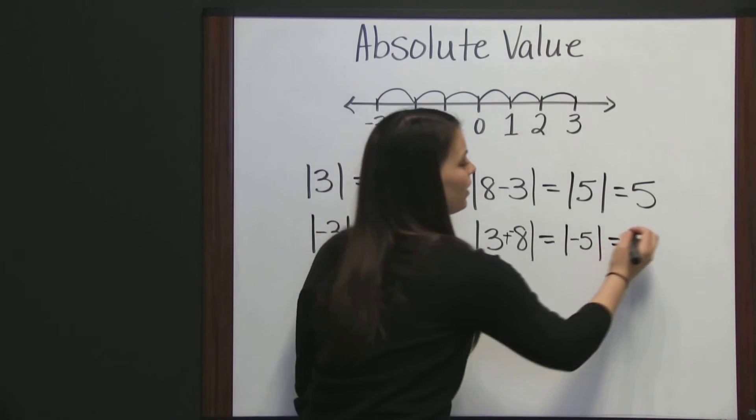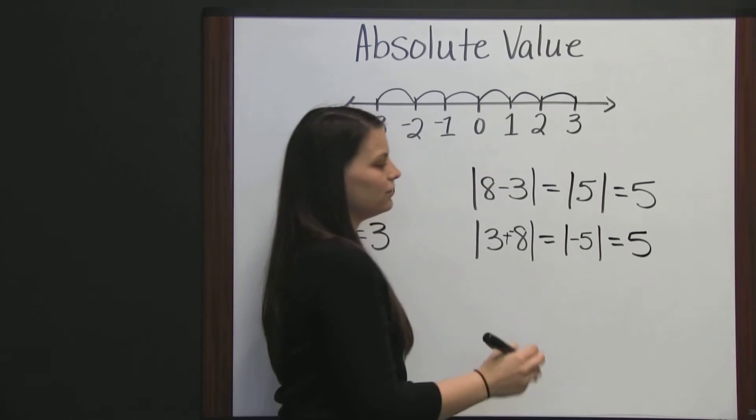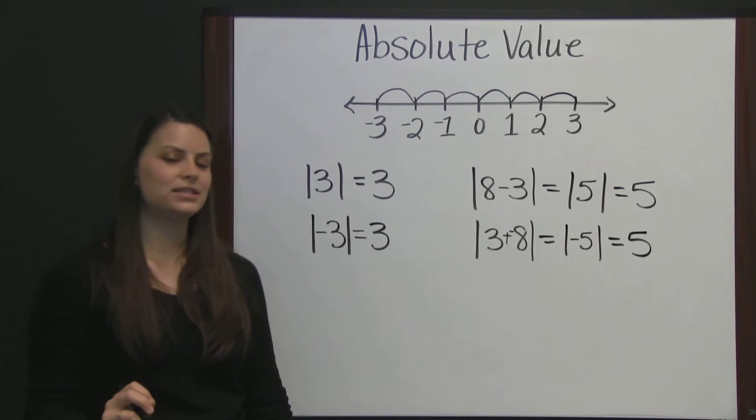So, the absolute value of negative five is also five, since negative five is five places from zero.